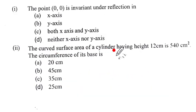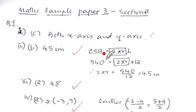Second one: the curved surface area of a cylinder having height 12 centimeter is 540 centimeter square. The circumference of its base is. Now, looking at our steps, CSA has been given as 540. So we write it as 2πrh and then this 2πr becomes the circumference.